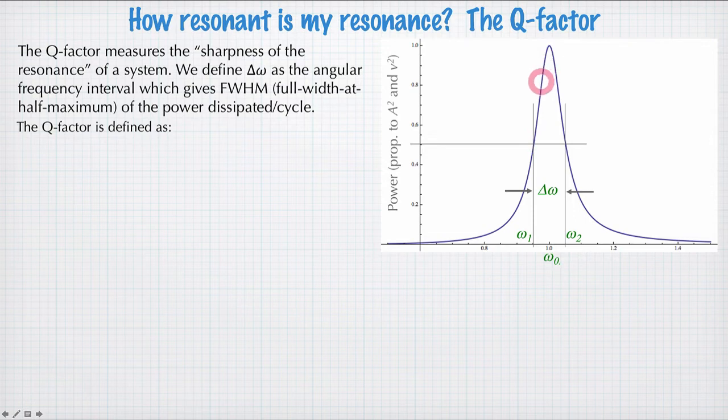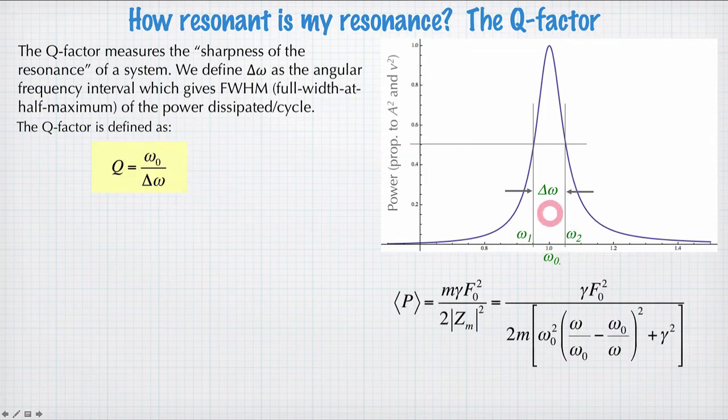Now there's a point here when we go down the curve where the power dissipated is half the maximum. And so we measure the frequency difference between this point and this point, where we both have half the maximum dissipated power. And this is called the full width at half maximum. And we call that frequency difference Δω, the difference between ω₁ and ω₂. The Q factor is defined as the resonant frequency, ω₀, divided by Δω. So it's this equation here.